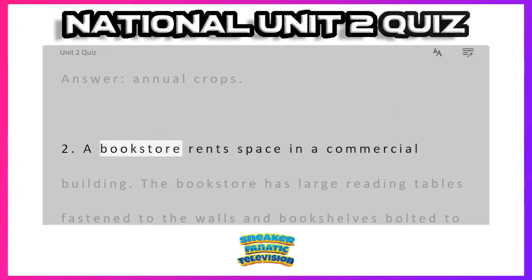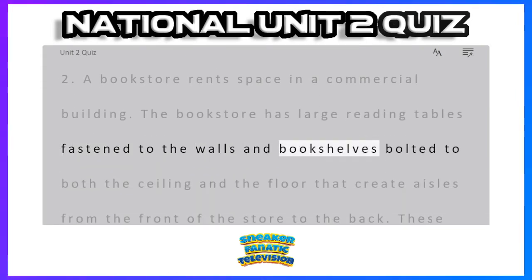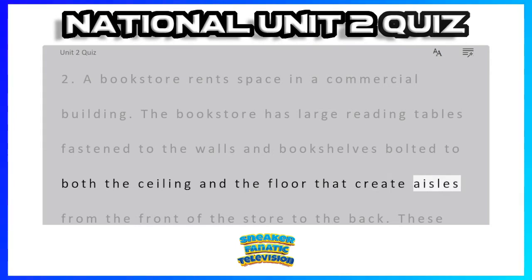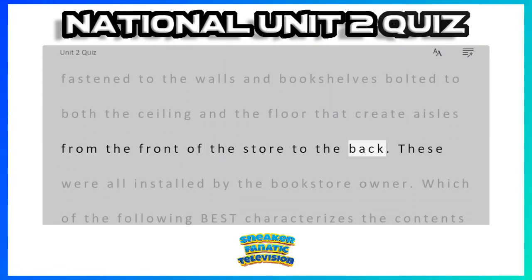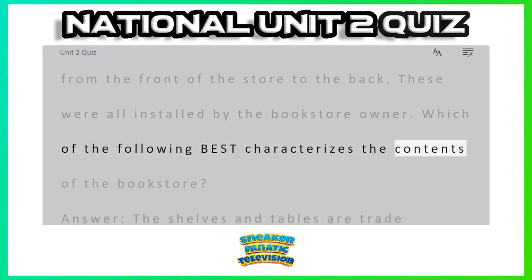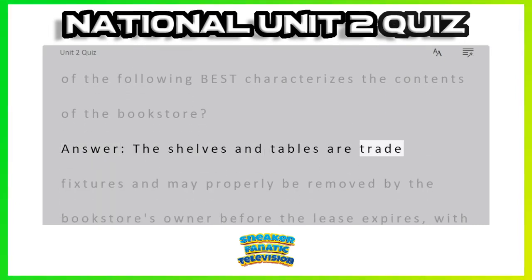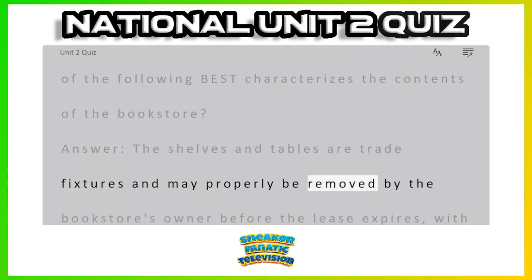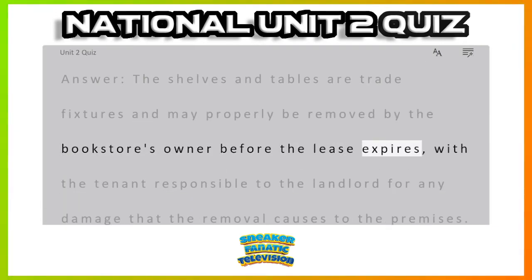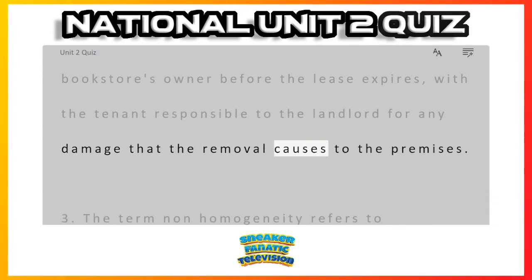Question 2: A bookstore rents space in a commercial building. The bookstore has large reading tables fastened to the walls and bookshelves bolted to both the ceiling and the floor that create aisles from the front of the store to the back. These were all installed by the bookstore owner. Which of the following best characterizes the contents of the bookstore? Answer: The shelves and tables are trade fixtures and may properly be removed by the bookstore's owner before the lease expires, with the tenant responsible to the landlord for any damage that the removal causes to the premises.